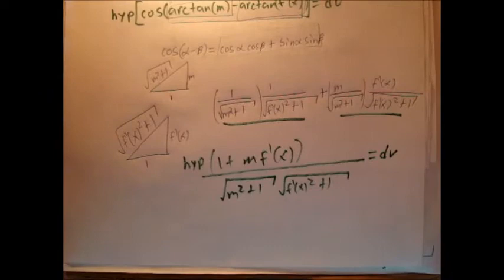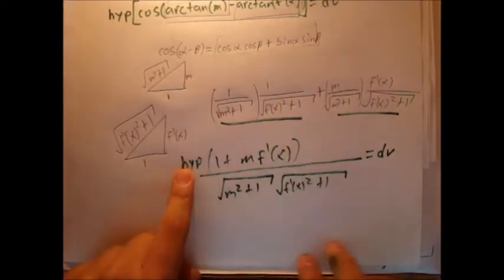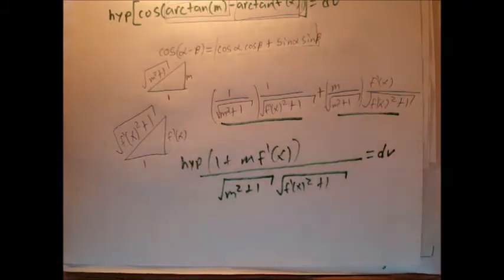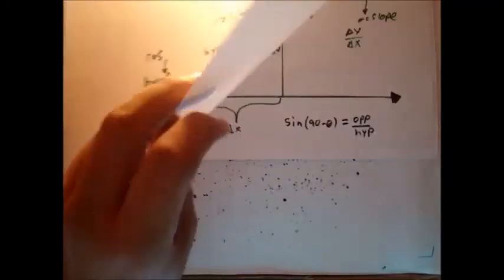So we have just found a successful relationship between hypotenuse and dv. Everything has been evaluated. Now let's compare relationships between dv hypotenuse and dx hypotenuse.